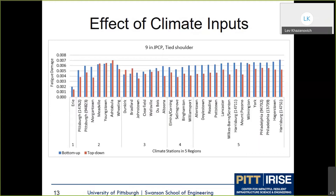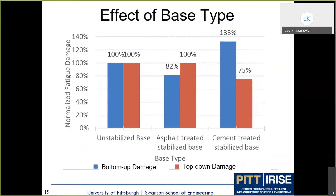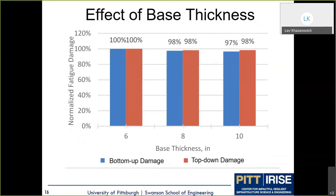Based on the results, weather locations were grouped into five regions based on proximity of weather stations and similarity in fatigue damage. The slide shows sensitivity of predicted fatigue damage for a nine-inch jointed concrete pavement with a tied PCC shoulder. Pennsylvania was divided into five regions corresponding roughly to its districts, except that a region near Lake Erie was separated into its own region due to its distinct climate effect.